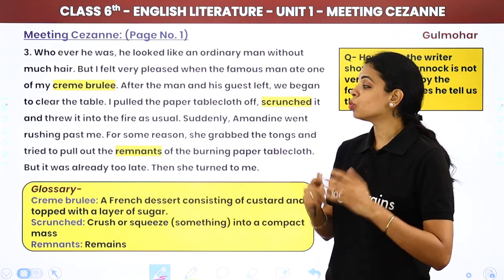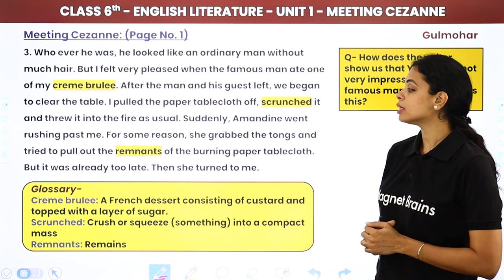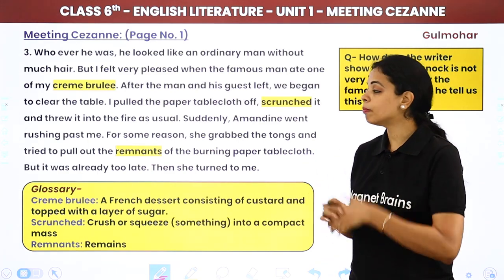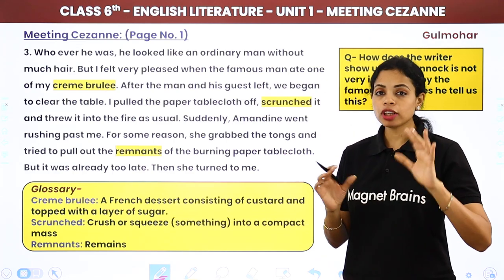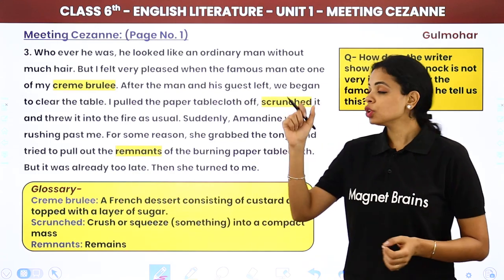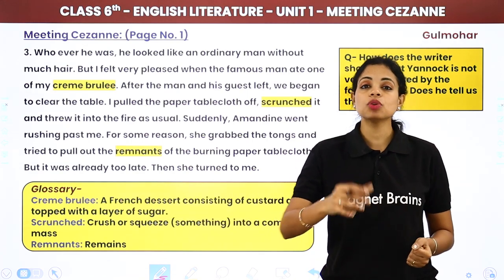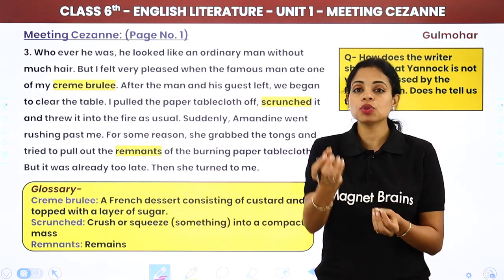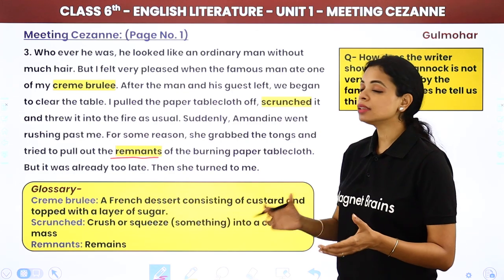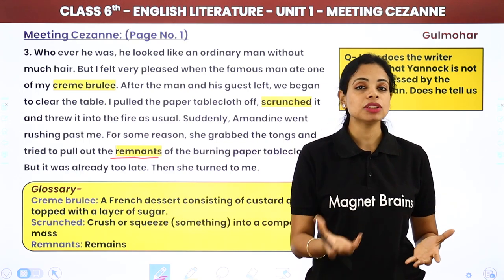Suddenly, Amandine went rushing past Yannick. For some reason, she grabbed the tongs — a chimta — and tried to pull out the remnants of the burning paper tablecloth. But it was already too late; the entire paper had burned up. 'Remnants' means the remaining or leftover part.